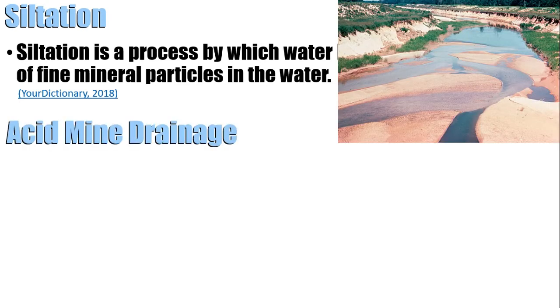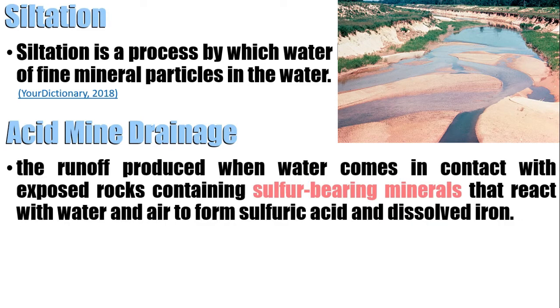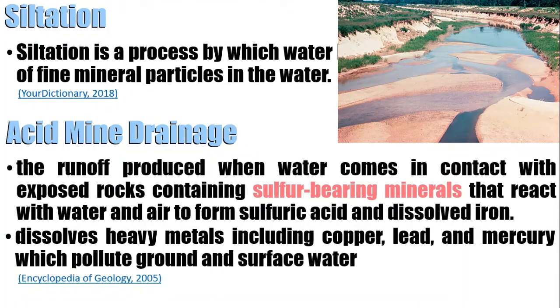Next is acid mine drainage. It is the runoff produced when water comes into contact with exposed rocks containing sulfur-bearing minerals that react with water and air to form sulfuric acid and dissolved iron. Acid mine drainage dissolves heavy metals including copper, lead, and mercury, which pollute ground and surface water.